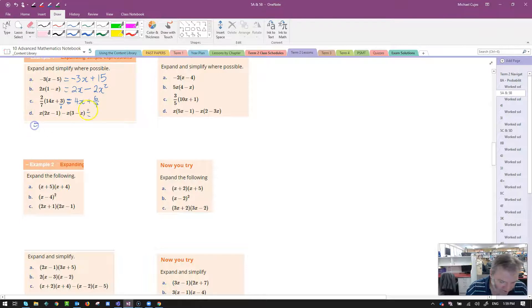Lucky last. This one might take a couple of lines. X times 2x is 2x squared. X times negative 1 is negative x. Negative x times 3 is negative 3x. And negative x times negative x is positive x squared. We have some like terms, we better gather them together. 2x squared plus another x squared, that's 3x squared. Negative x take away 3x, that's negative 4x altogether.